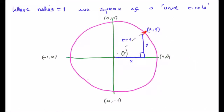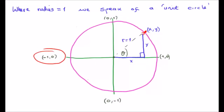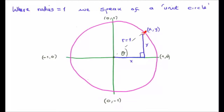Where a circle has a radius of 1, we speak of it as being a unit circle. The key points on the unit circle are: (1, 0) where x=1, y=0; (0, 1) where x=0, y=1; (-1, 0) where x=-1, y=0; and (0, -1) where x=0, y=-1. Any point in this circle has a coordinate x and y.